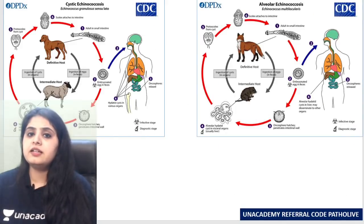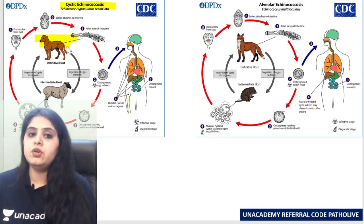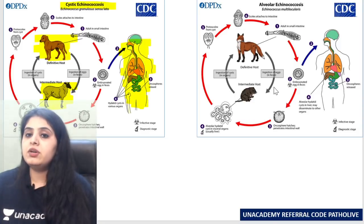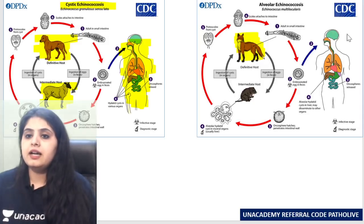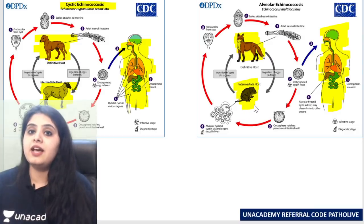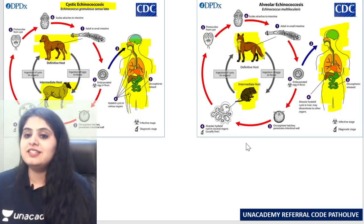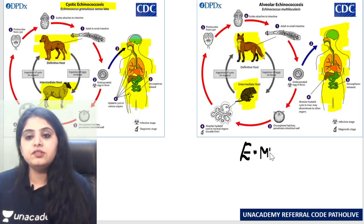So this is the life cycle of Echinococcus granulosis: you have a dog, a sheep, and us as accidental hosts. On the other hand, I have the same life cycle but with a fox as the definitive host and a rodent as the intermediate host.